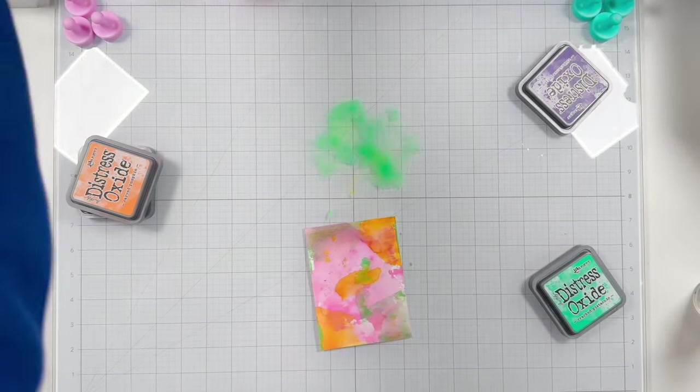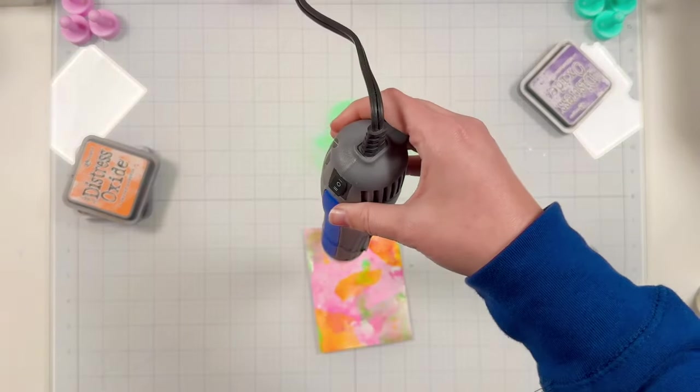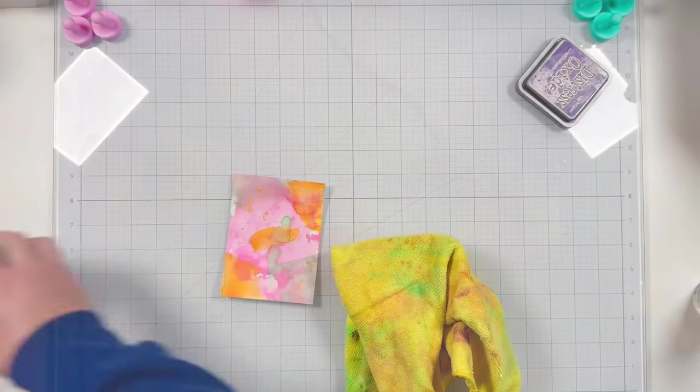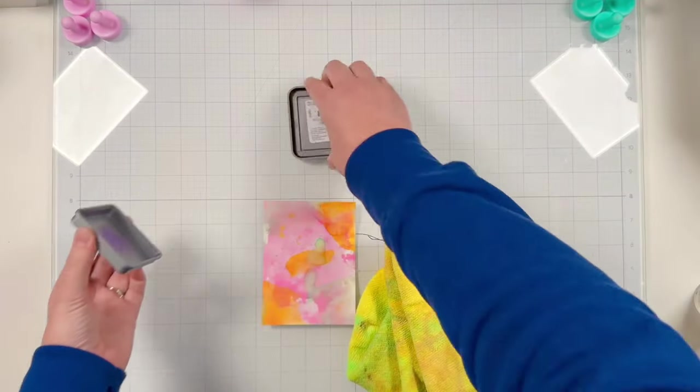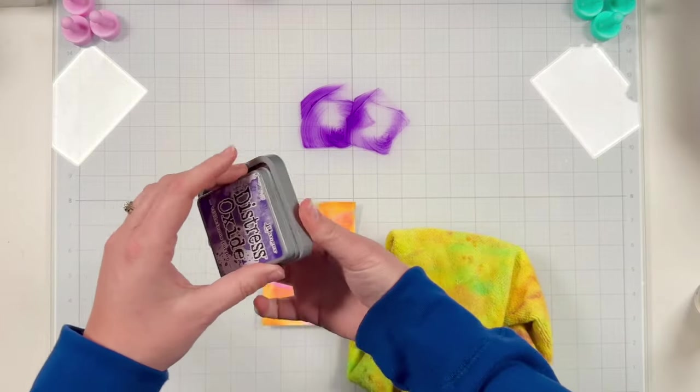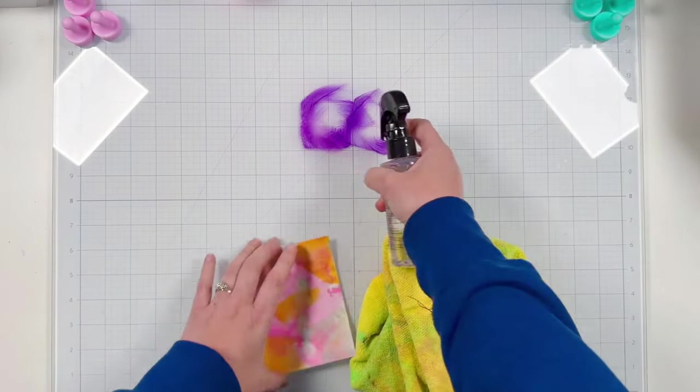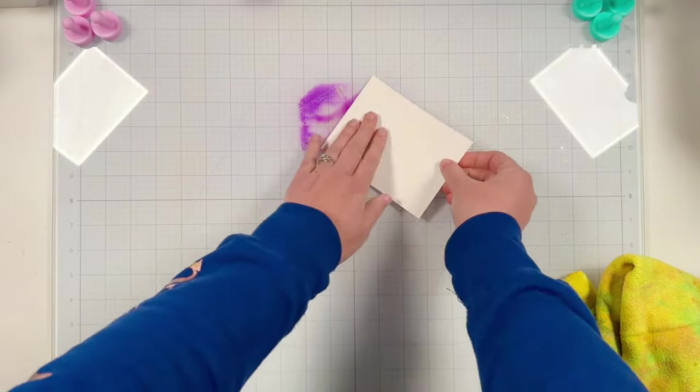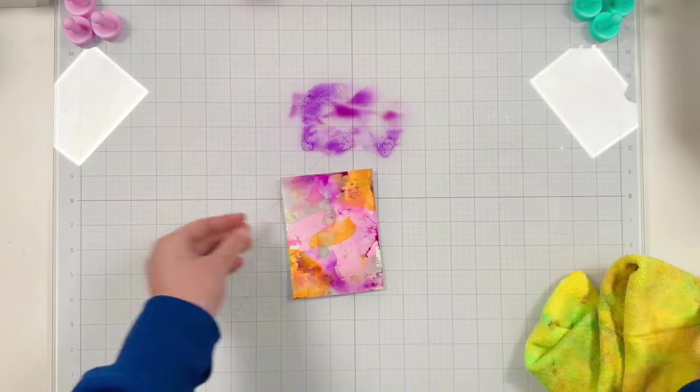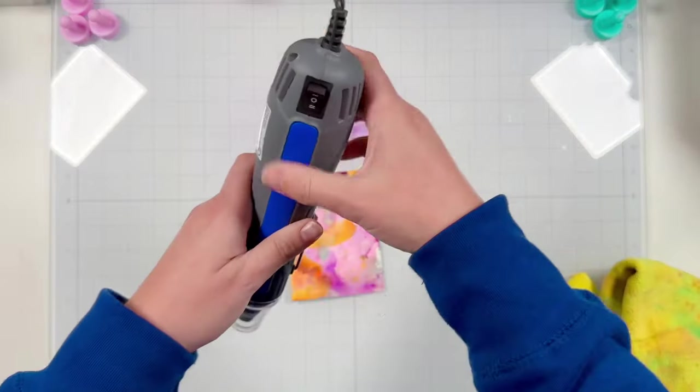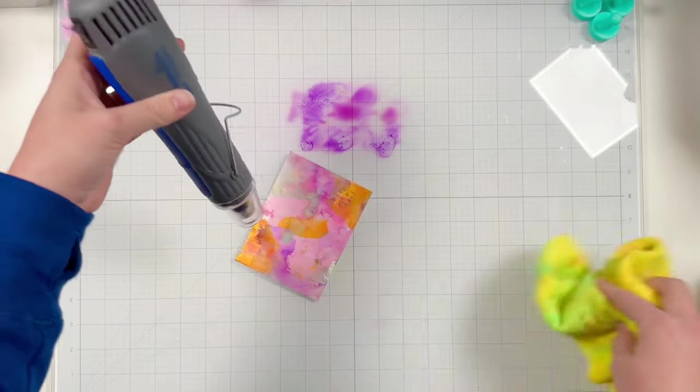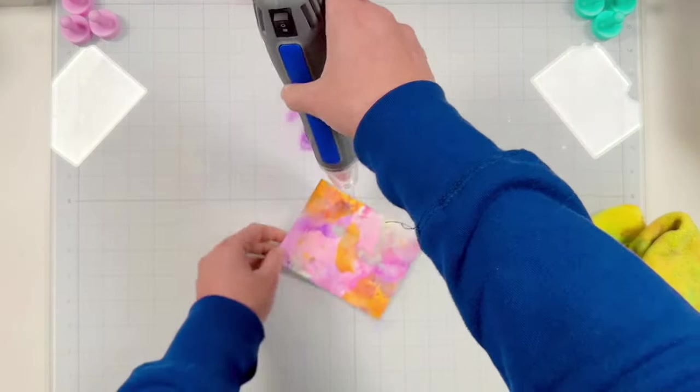Once again I'll use my heat gun to dry that before moving on to my final color which will be villainous potion. I'm not going to do as much color like I did with the pink and the orange. I'm just trying to get it onto the edges of my panel and then I will also use my paintbrush to do a little bit of splattering.